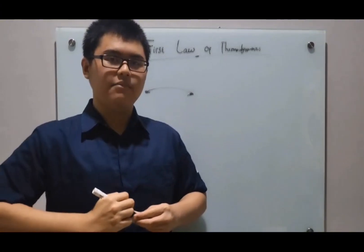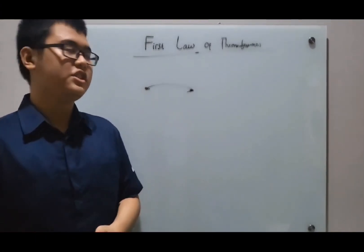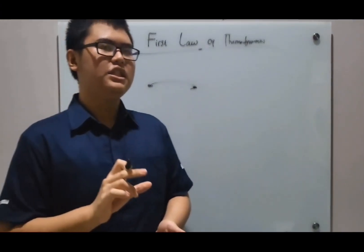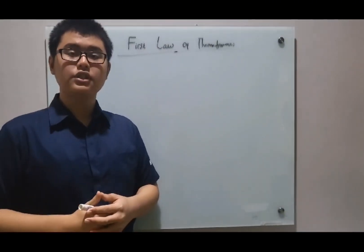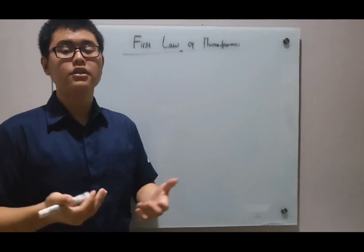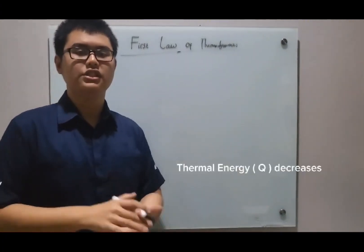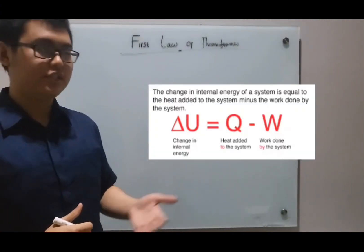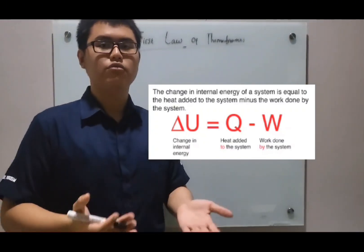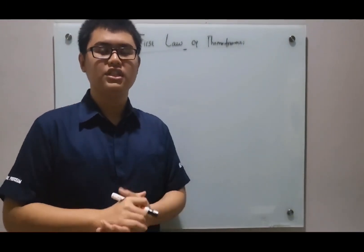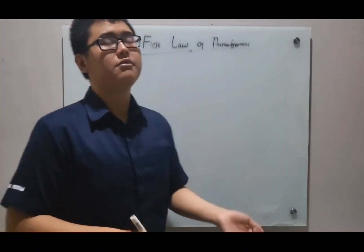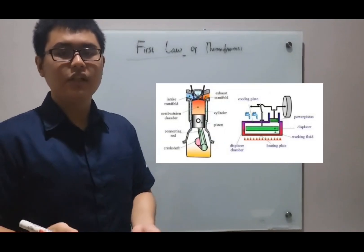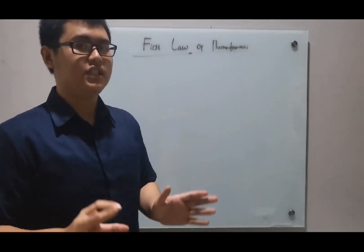To break this down, let's consider a simple example where energy is transformed. Consider a cup of coffee that is cooling down. As it loses heat to the surrounding environment, the thermal energy decreases. This change in internal energy is equal to the heat transferred minus the work done in the system. The first law tells us that energy can be transformed from one form into another — such as mechanical to thermal, or chemical to electrical — but the total amount of energy remains constant.